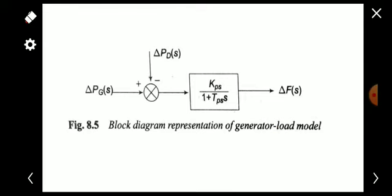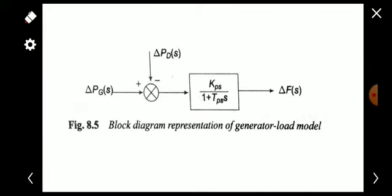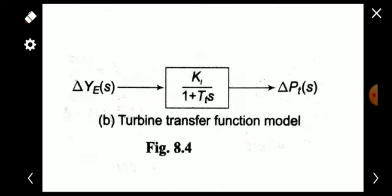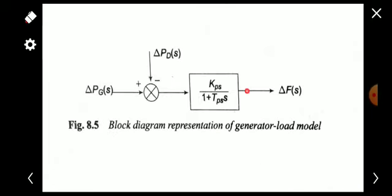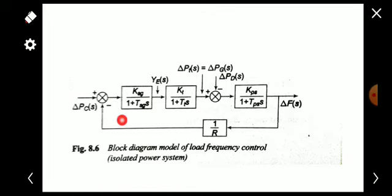These three models — the turbine speed governing system model, the turbine model, and the generator load model — can be combined to draw the complete block diagram of load frequency control of an isolated (single-area) power system. The speed governing system block, the turbine model block, and the generator load model block are all connected together to form the full block diagram.